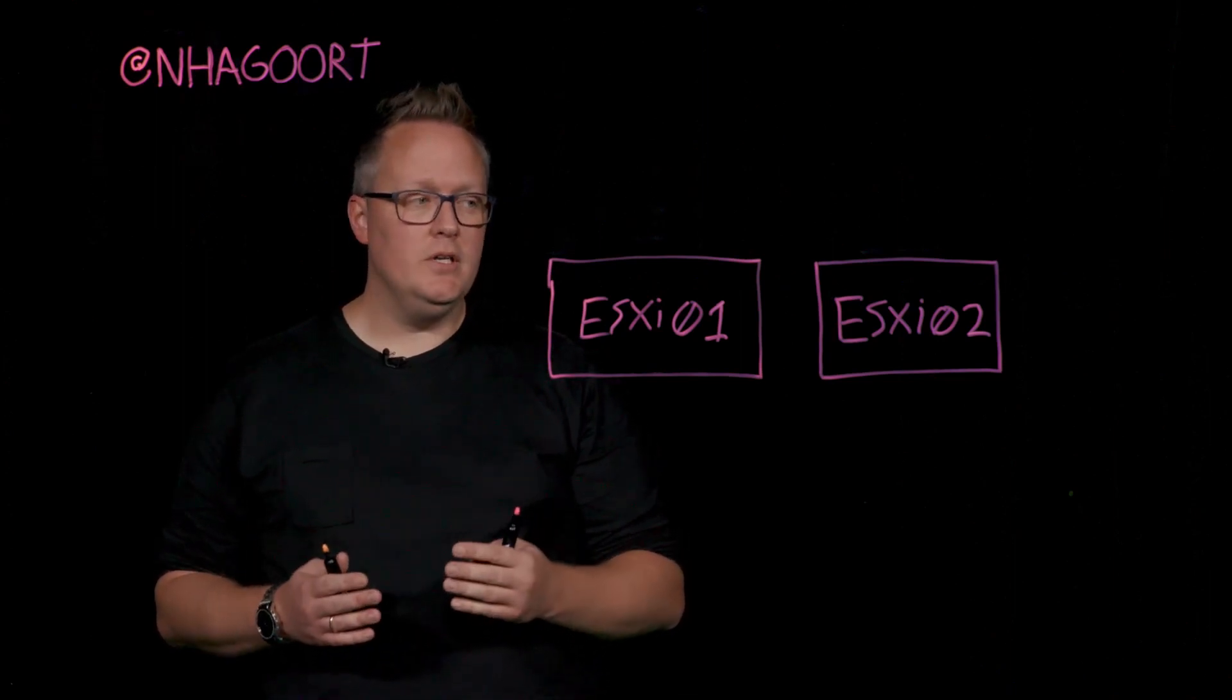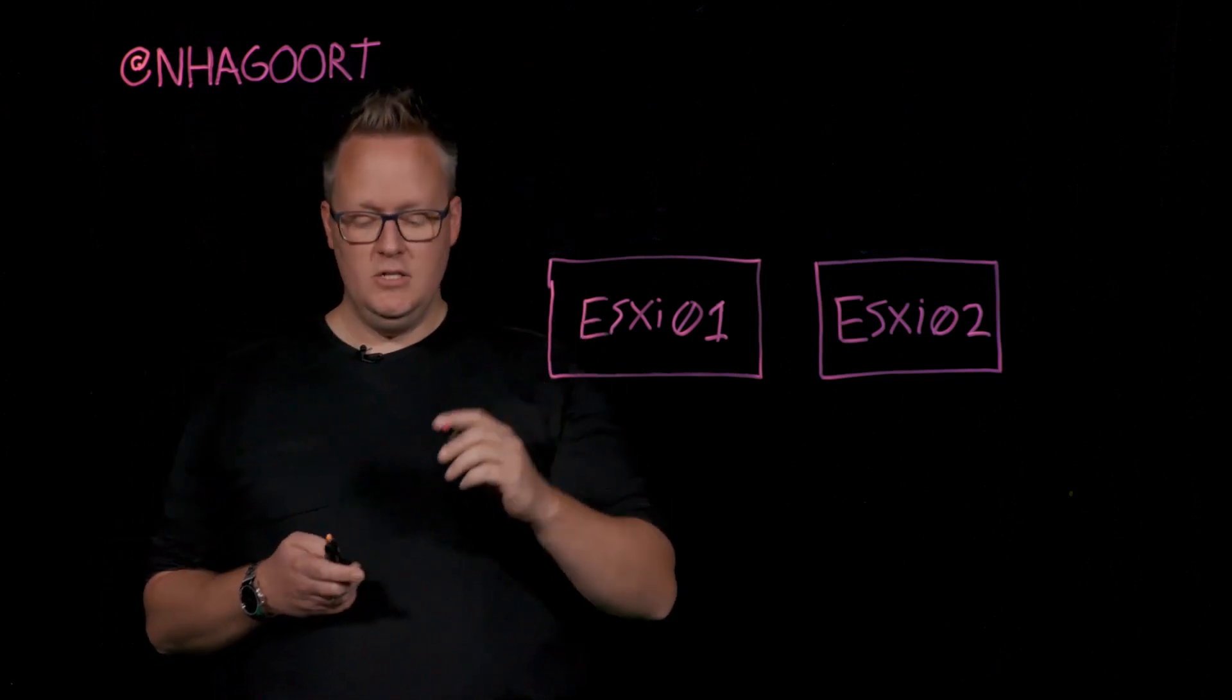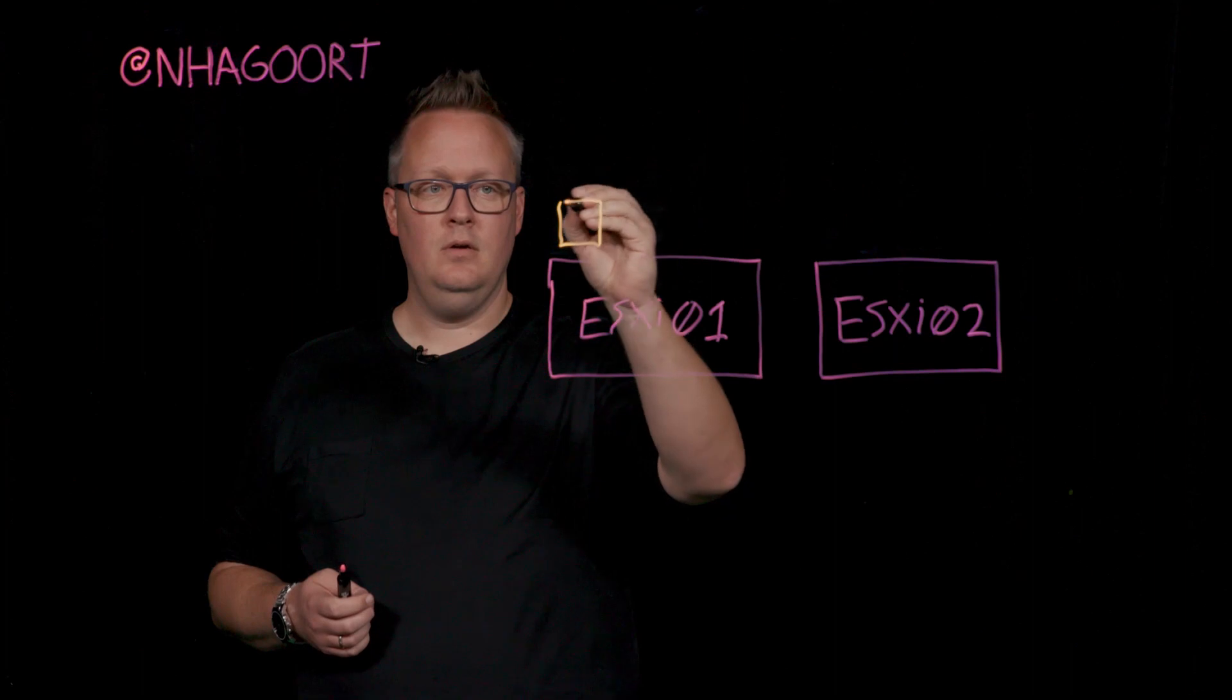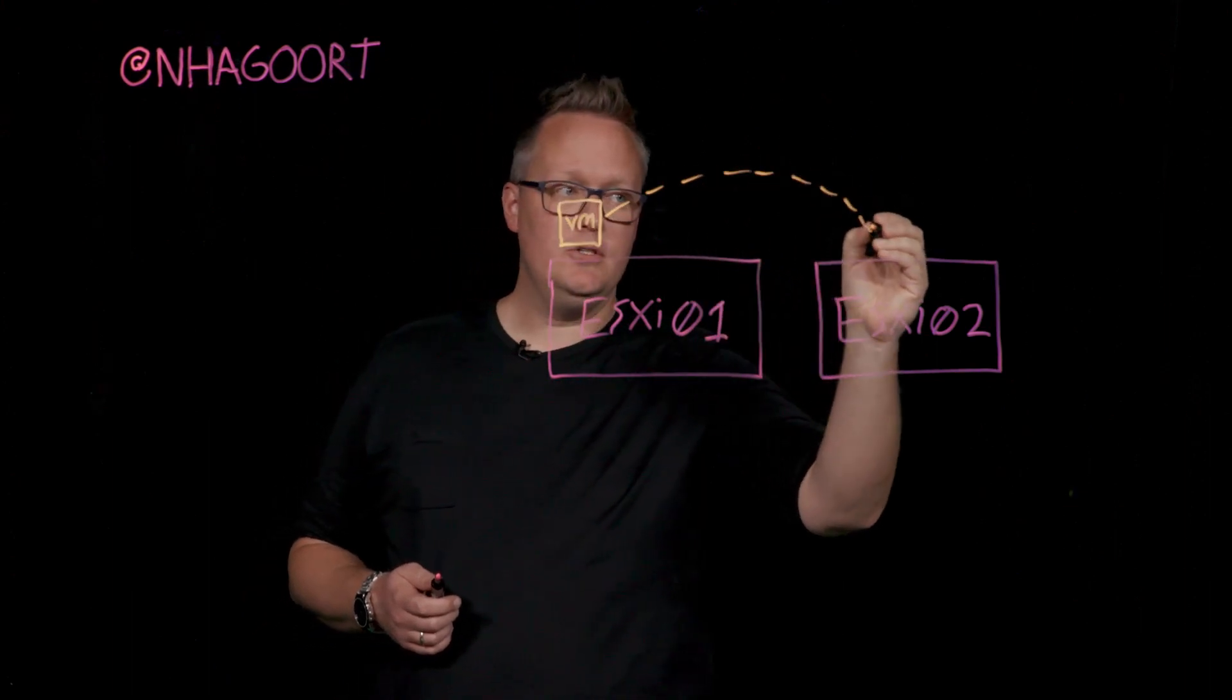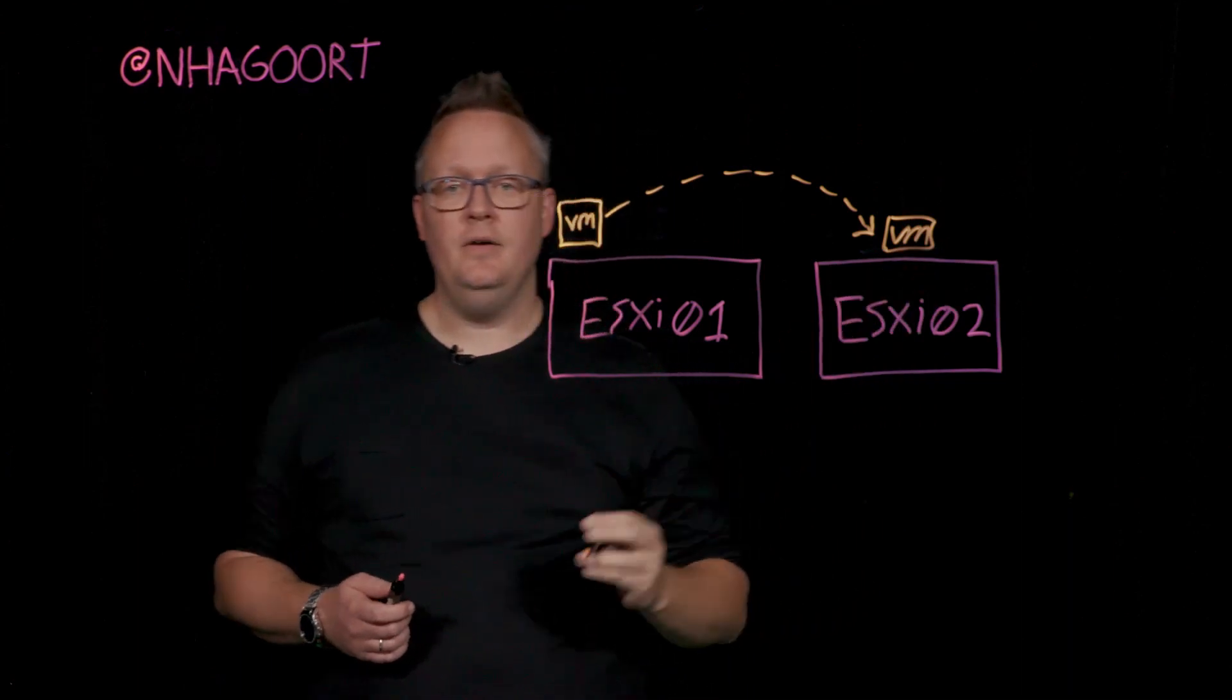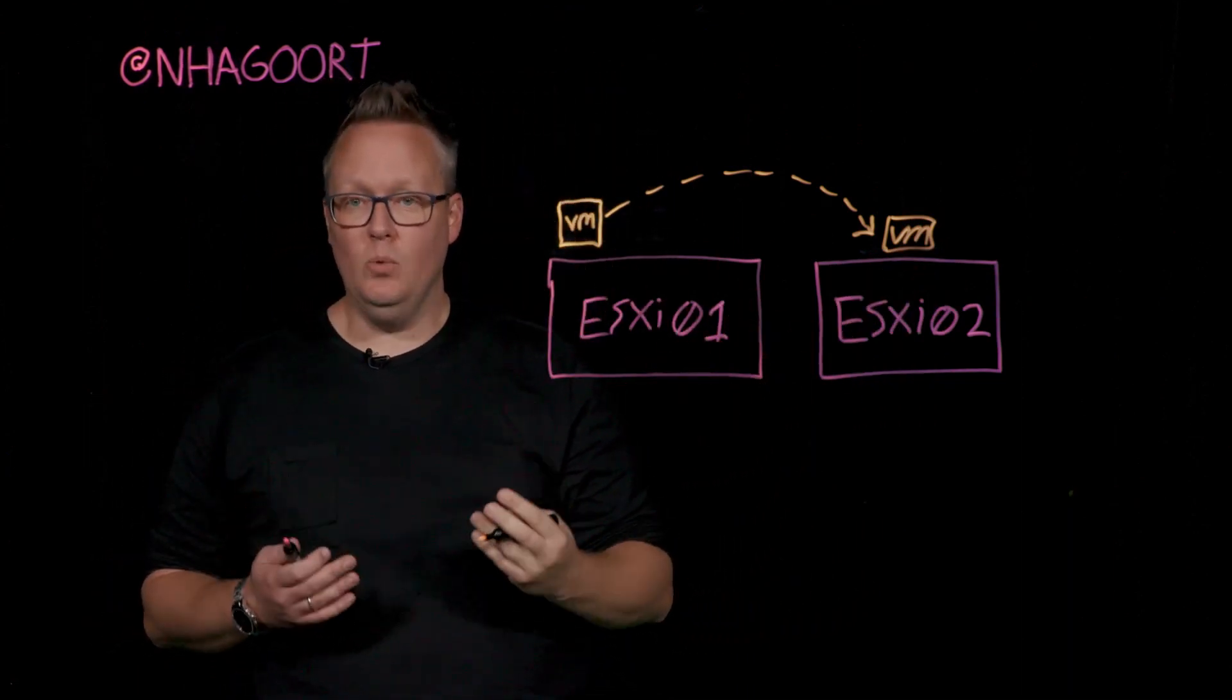Looking at vMotion and what it does, in essence, it's the ability to have a virtual machine running on the source ESXi host and we can now migrate the active state of that virtual machine to the destination host. The important thing to understand here is that while being live migrated, the application keeps on running. There is no downtime involved.